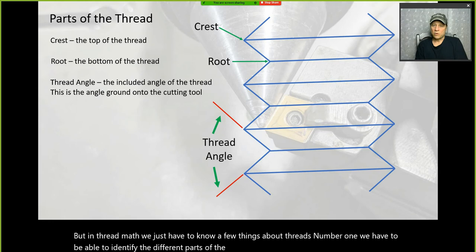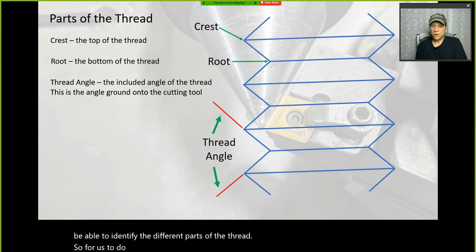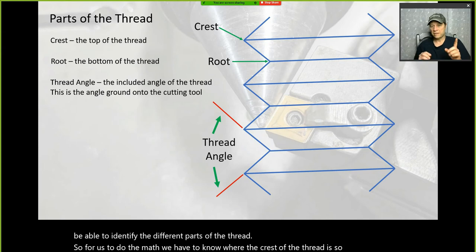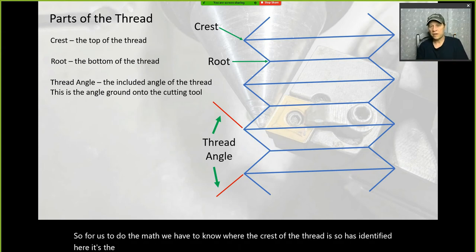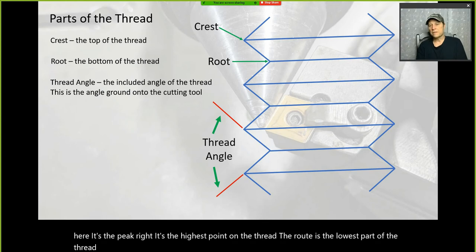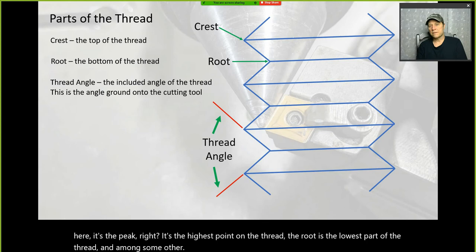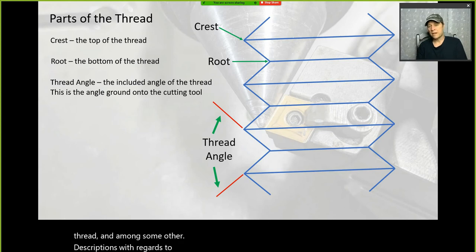We have to know where the crest of the thread is — it's the peak, the highest point on the thread. The root is the lowest part of the thread. There are some other descriptions regarding the width of a crest flat and root flat that won't have any bearing on our math.